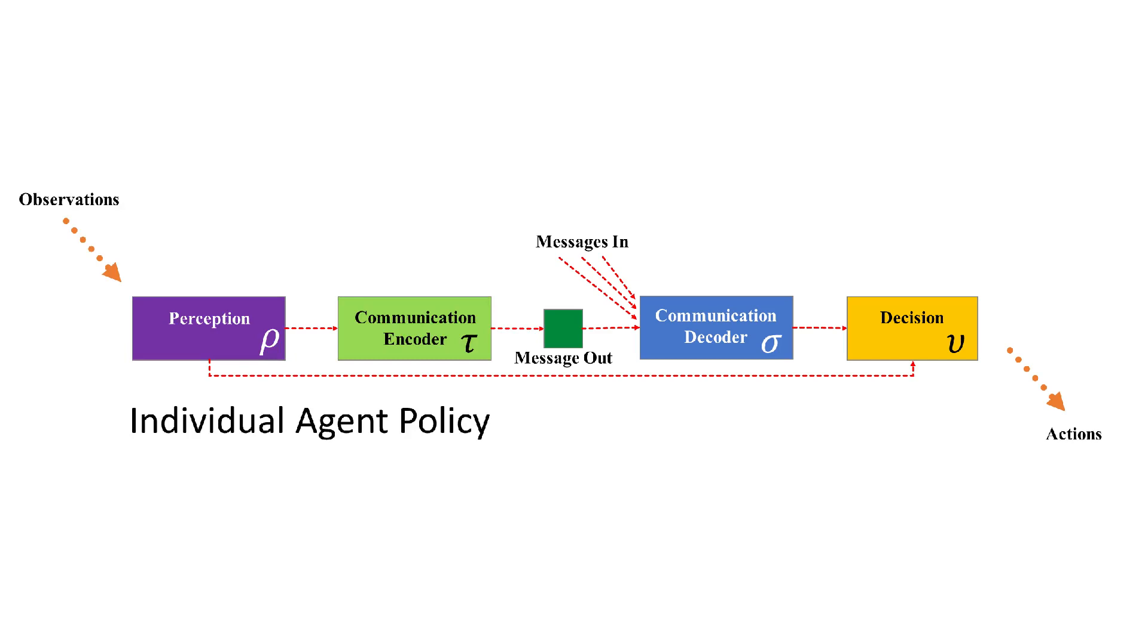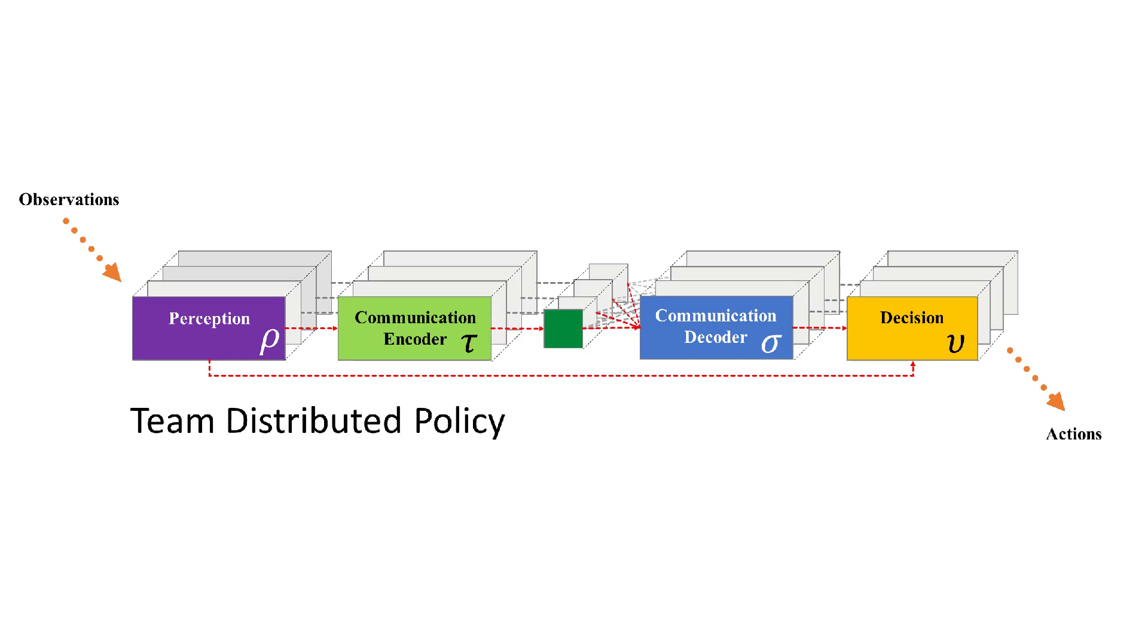We approximate these policy functions using a neural network architecture in which identical agents train together as a team. We then deploy the robots in teams of varying size, even larger teams than they were ever trained with.